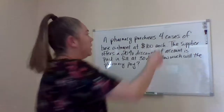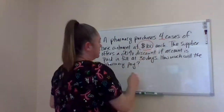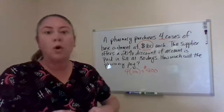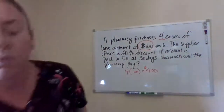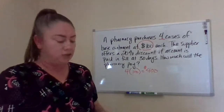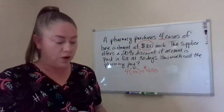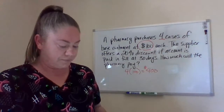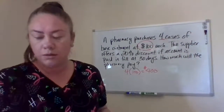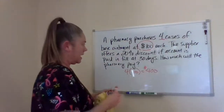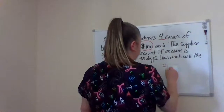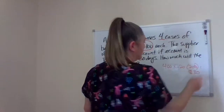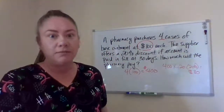So in this case, we have four cases and they're $100 each. Four times 100 is $400. That's the total bill. So what we have to do now is calculate what is 20% off of the $400. You are going to multiply 400 times 0.20 — that is 20% — and that gives you $80. So the discount is $80 off.